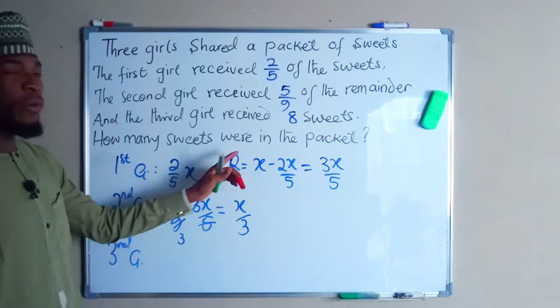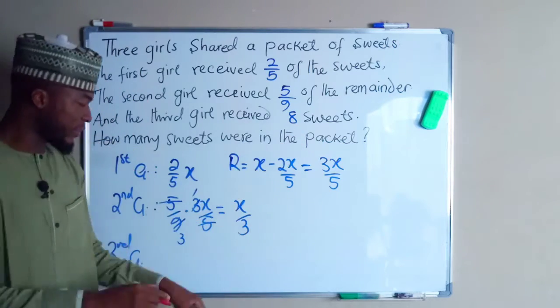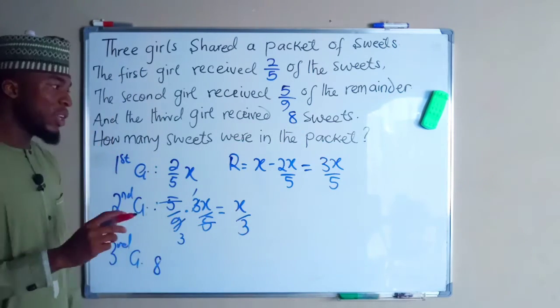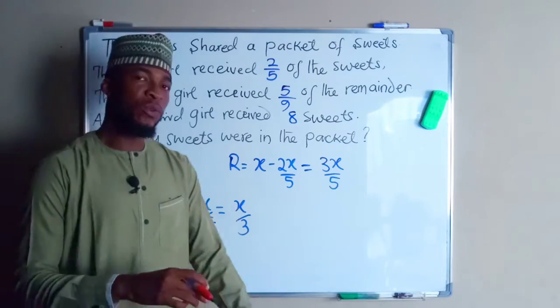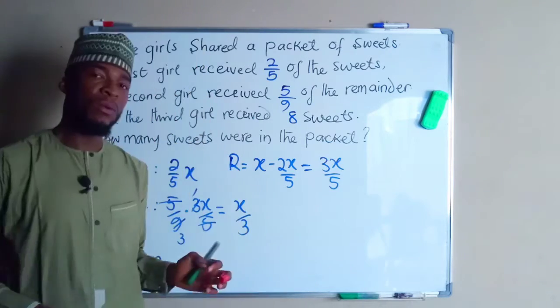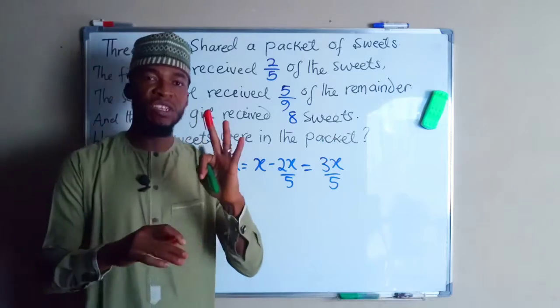The third girl will now receive 8 sweets, as given. So now we want to find the total number of sweets in this packet. We know that if we add these three shares, we are going to get X, which is the total number of sweets.